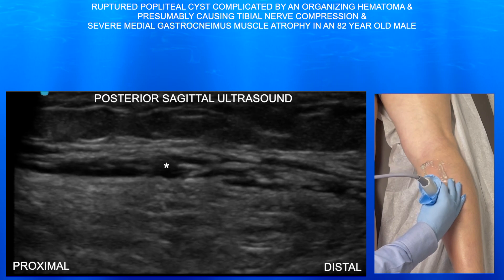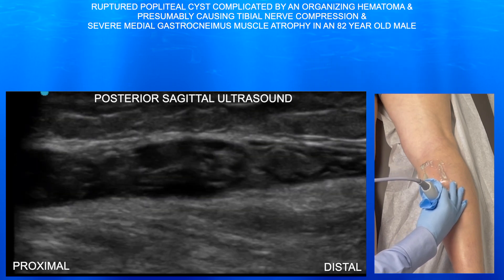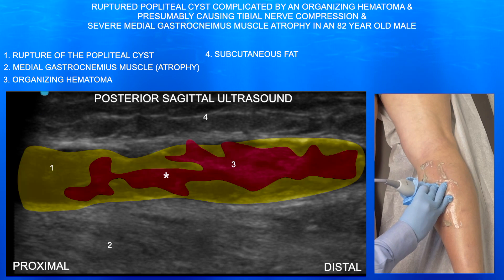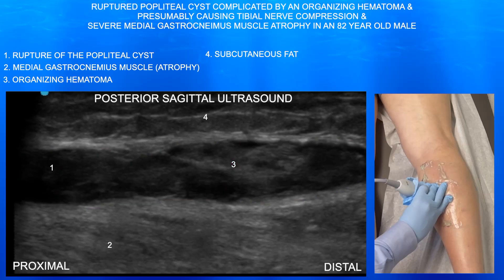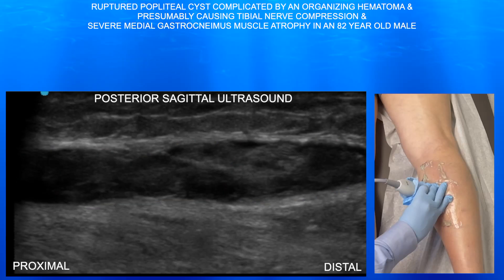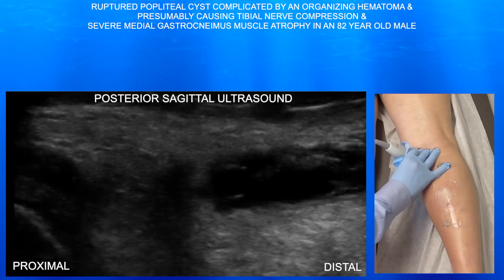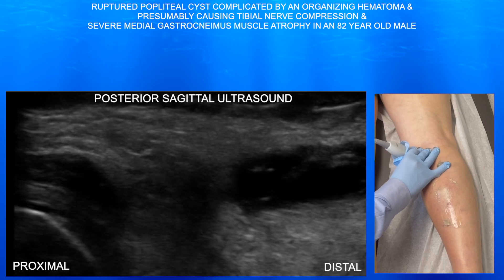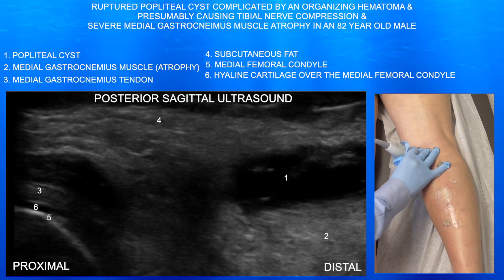Here we're going distally. You can see the fluid tracking within the subcutaneous tissue. This is a very oblong popliteal cyst, and there's hyperechoic signal and stranding within this cyst, consistent with organization. Given the fact this patient is on blood thinners, it was initially felt as maybe an organizing hematoma mixed in with this cyst.